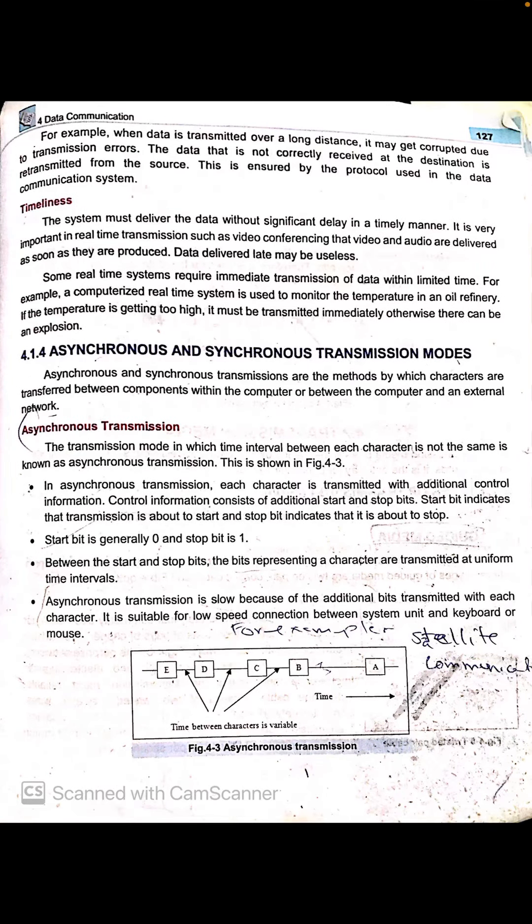Assalamu alaikum, class ninth. Hope you all are fine and doing well. Today our topic is asynchronous and synchronous transmission. Asynchronous and synchronous transmission are the methods by which characters are transferred between components within a computer, or between the computer and an external network. When data is transferred from one device to another, the bits or characters are sent in two types: asynchronous transmission mode and synchronous transmission.